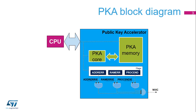Performing public key cryptography requires intensive computing, which represents a huge workload when done entirely by software. The public key accelerator lightens the STM32 CPU's workload by performing key operations in the PKA core using dedicated PKA memory. The CPU loads initial data into the PKA internal RAM, which is located at address offset 0x400. Then, in the PKA control register, the CPU specifies the operation to be executed.